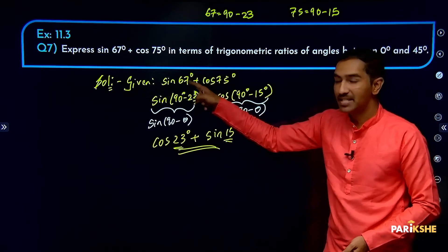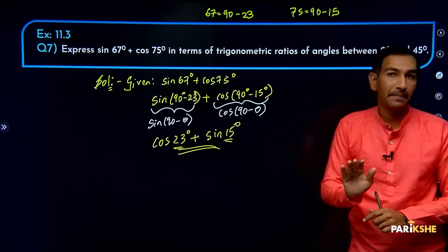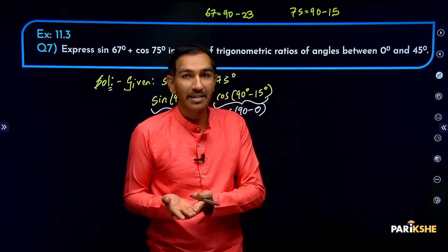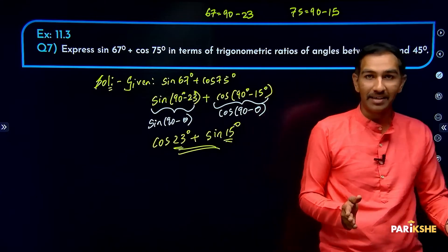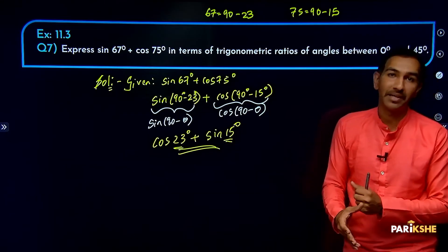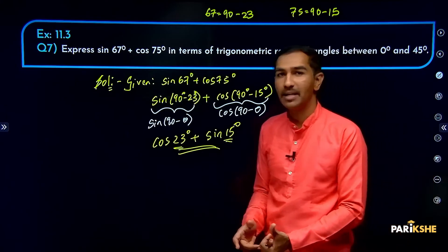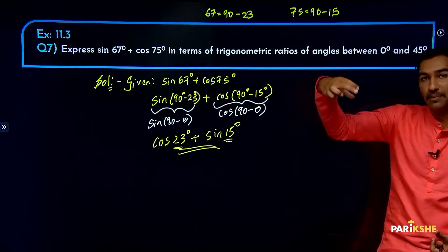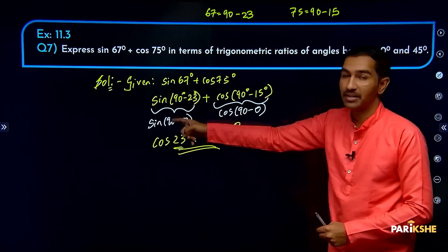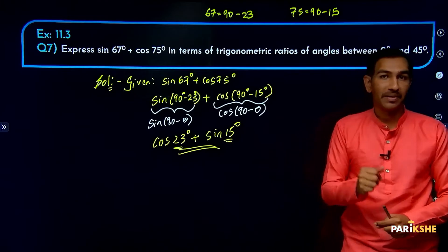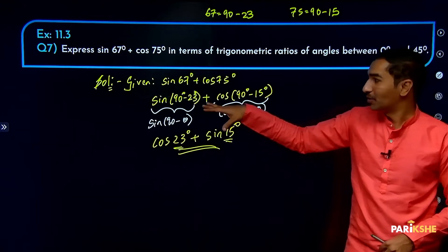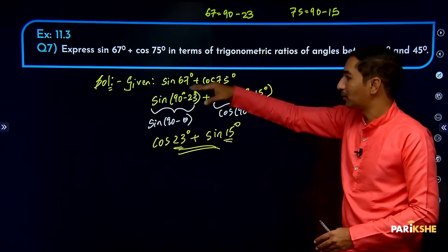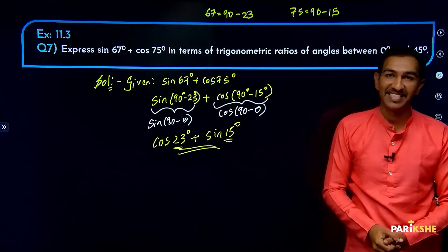Note: if 67 is given, don't subtract from 100 — that's not the right approach. Complementary angles always work with respect to 90, because a plus c equals 90 degrees. In a right angle triangle, one angle is 90, and the other two angles must add up to 90. That's why we always use 90 for complementary angles — using 100 would be wrong.